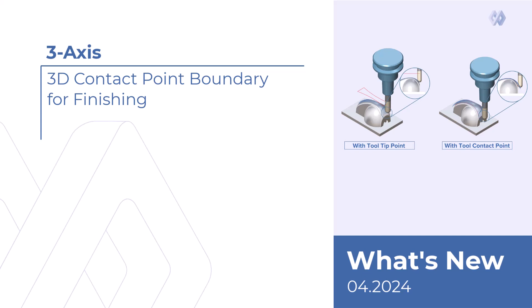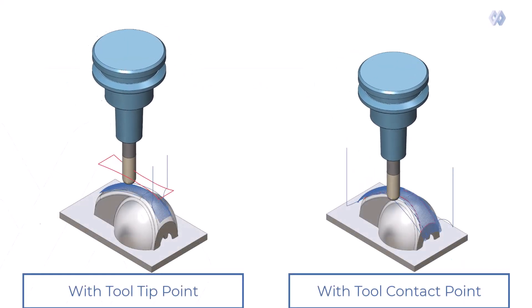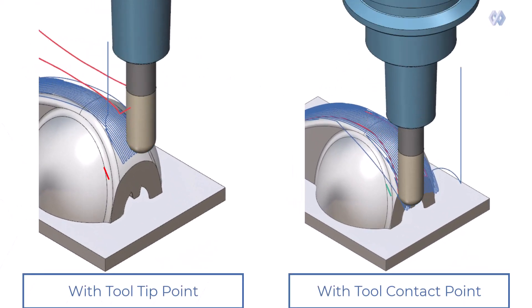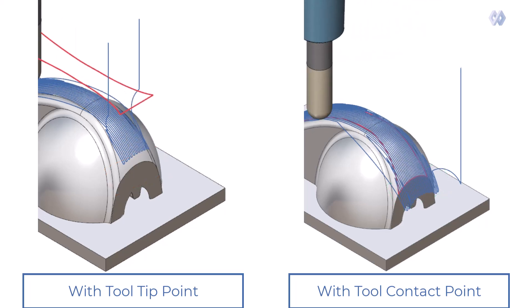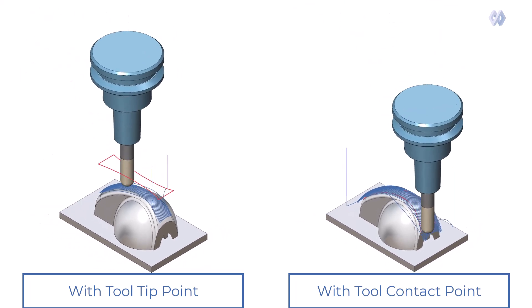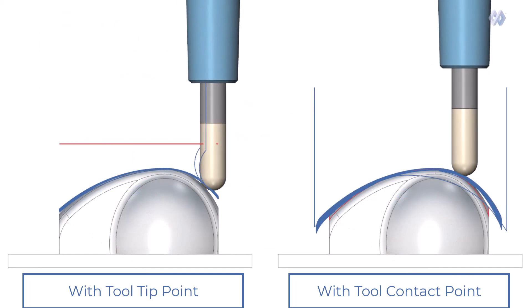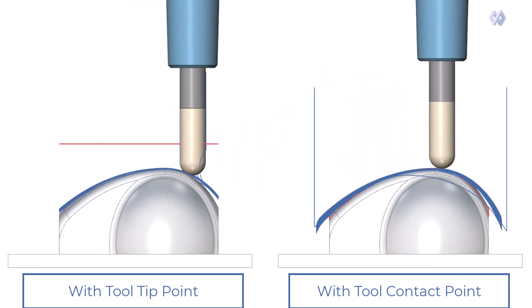3-Axis 3D Contact Point Boundary for Finishing. The new implementation of the 3D Contact Point Boundary accurately limits the finishing toolpath to the 3D containment on the part. This ensures that the tool contacts the surface exactly at all points.